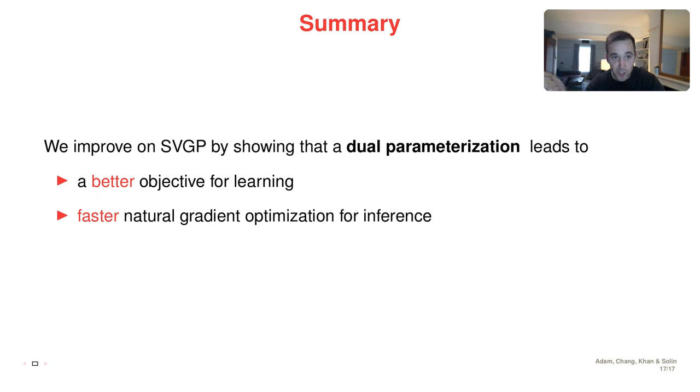So as a summary, we improve previously established SVGP methods by showing that dual parameterization leads to a better objective for learning the kernel hyperparameters. And as part of the learning, we need to do inference, and we can also do that faster using a particular instantiation of natural gradient descent. Thank you for your attention.